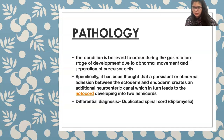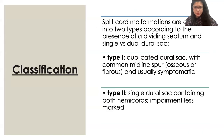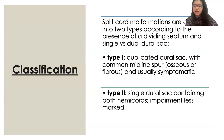An important differential diagnosis is the duplicated spinal cord, also known as diplomyelia. There are basically two types: Type 1, which has a duplicated dural sac with a common midline spur, and Type 2, which has only a single dural sac. Impairment is less marked in Type 2.